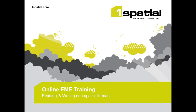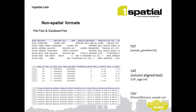Let's start with our first demo, looking at reading and writing some non-spatial formats. Before jumping into FME, here are some of the files we're going to work with. We've got a text file using the TXT text reader, some CAT data — column-aligned text — which is a new reader in FME 2012, and some CSV files, which are comma-separated values. We'll be looking at those right now.